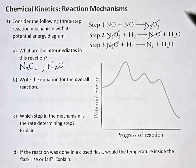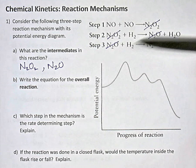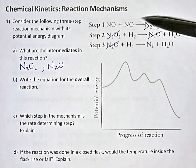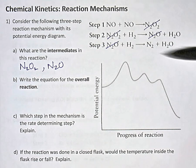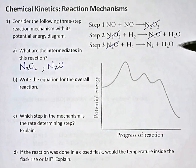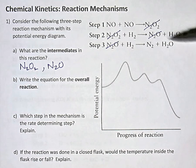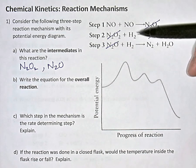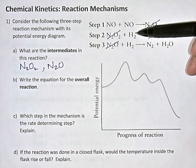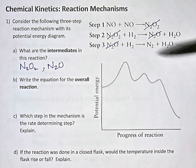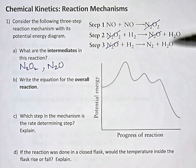Now, are there any things that appear on the left-hand side of the equation but then later on the right-hand side? If so, those would be called catalysts. We see NOs on the left, but there's no NOs on the right. There's hydrogen on the left, but no hydrogen on the right. So there are no catalysts in this mechanism.